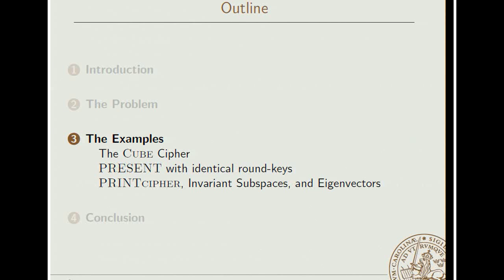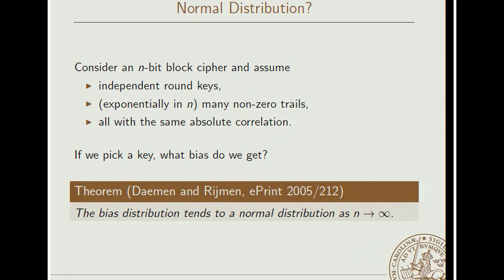So the examples. First of all, the cube cipher, which is just a toy cipher. But it does tell us something interesting. There is a result by Damon and Raymond saying that if we have an n-bit block cipher with independent round keys, a huge number of non-zero trails, and all of those trails have the same absolute correlation—so all of those correlations are just plus or minus some constant—then when we pick a key, what bias do we get? What distribution is there? And the theorem says that the bias distribution tends to a normal distribution as we increase n.